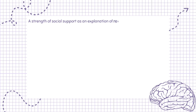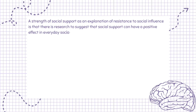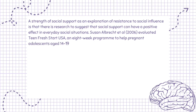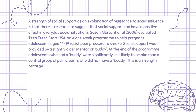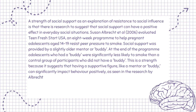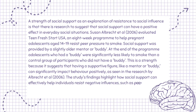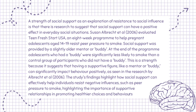A strength of social support is that research suggests it can have a positive effect in everyday social situations. Susan Albrecht et al. (2006) evaluated Teen Fresh Start USA, an eight-week program to help pregnant adolescents aged 14 to 19 resist peer pressure to smoke. Social support was provided by a slightly older mentor or buddy. At the end of the program, adolescents who had a buddy were significantly less likely to smoke than a control group without one, highlighting how social support can effectively help individuals resist negative peer influences and promote healthier choices.